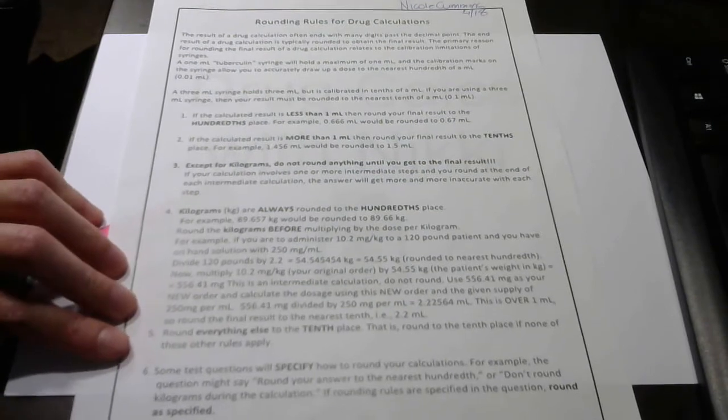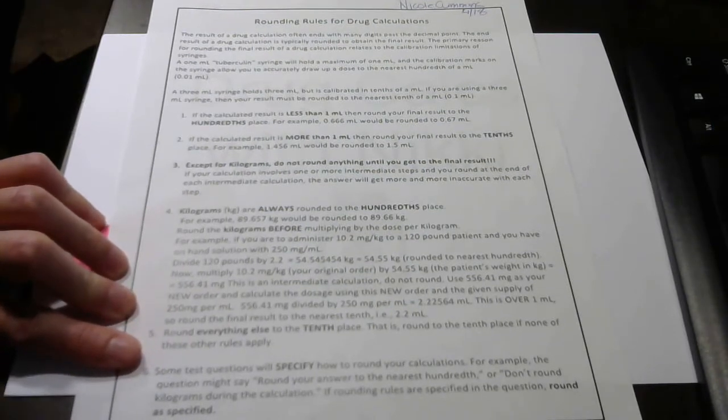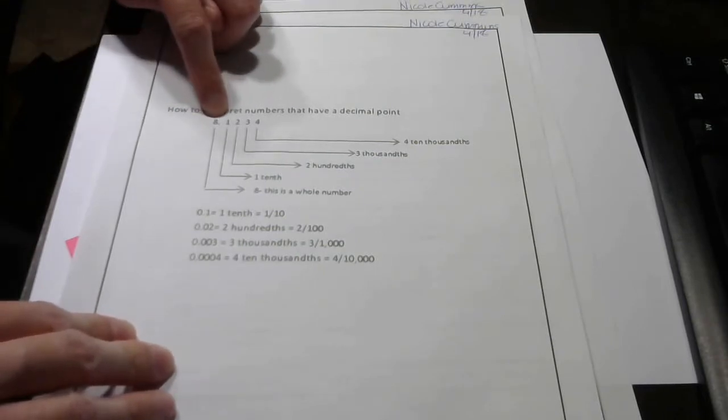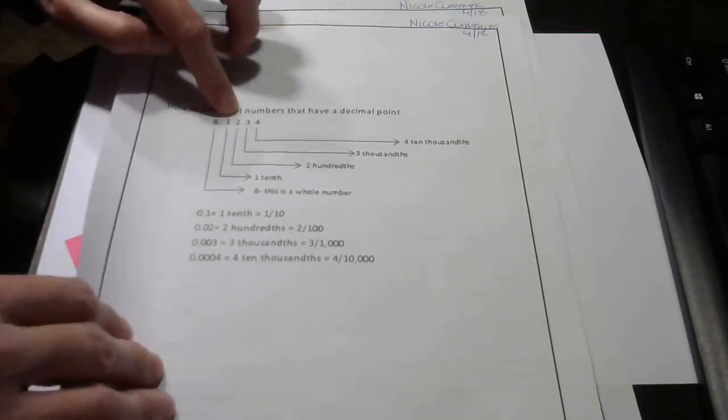And then it says round everything else to the tenths place if none of these other rules apply. So the tenths place again is the first number to the right of the decimal.